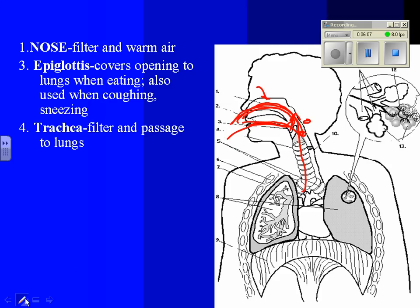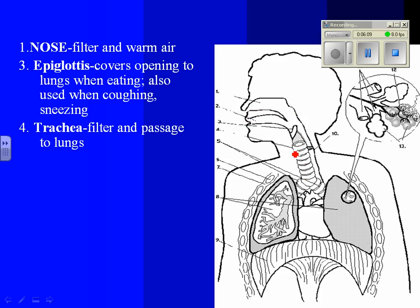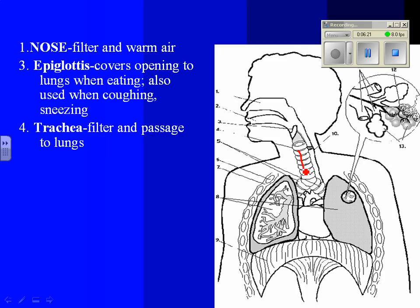Number four, this one right here is the trachea. The trachea also filters air, and it's the vein that passes its way to the lungs. We'll talk about that a minute.